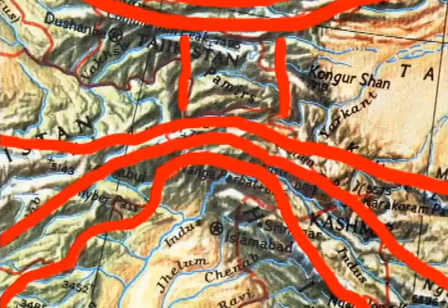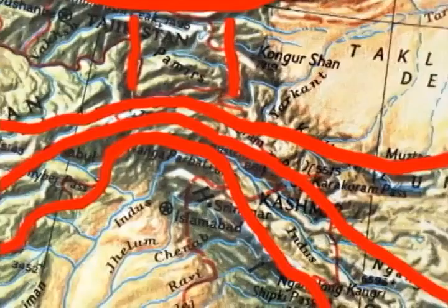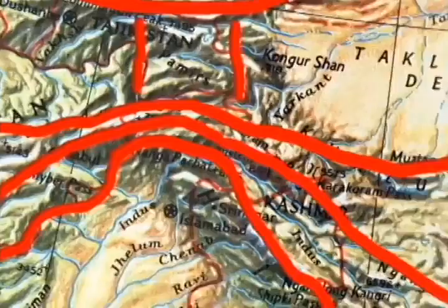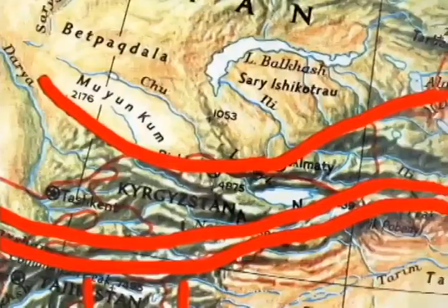A detailed study of the Puranic accounts allows the other mountain ranges of Jambudvip to be identified with mountain ranges in the region north of India. Although this region includes some of the most desolate and mountainous country in the world, it was nonetheless important in ancient times.